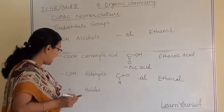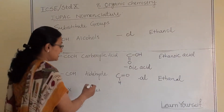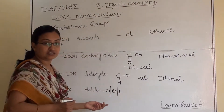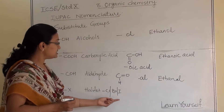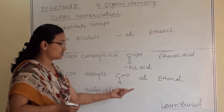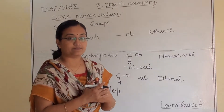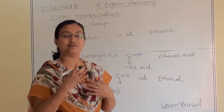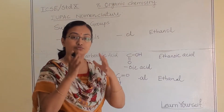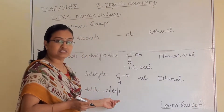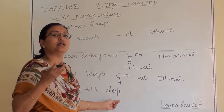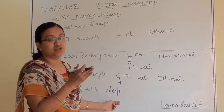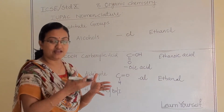The last one is halide, which consists of chloride, bromide, and iodide. When a halide is attached to a structure, it comes as a prefix: chloro-, bromo-, or iodo-. For example, chloromethane, chloroethane, bromopropane, and so on.